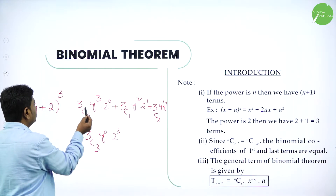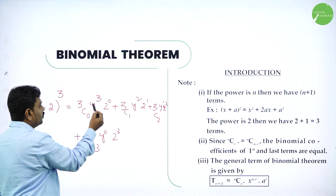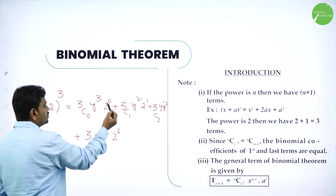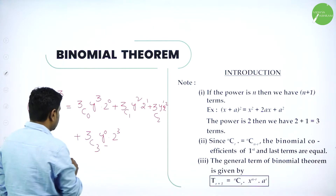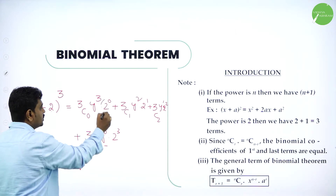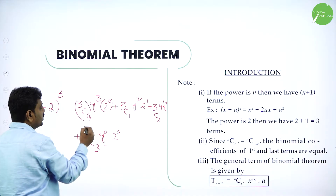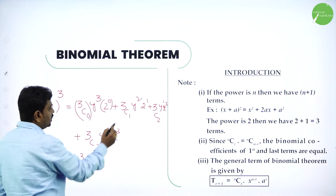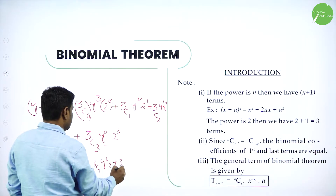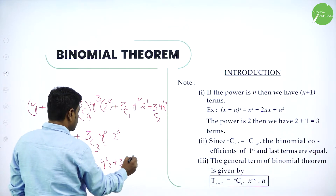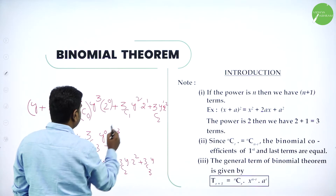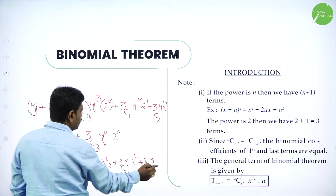Now simplify. nC0 is 1, so 1 times y cubed is y cubed. Anything power 0 is 1, so those terms drop. Then 3C1 times y square times 2, then 3C2 terms. Anything power 0 becomes 1, so we get 2 cubed at the end. This gives us the full expansion of y plus 2 whole power 3.